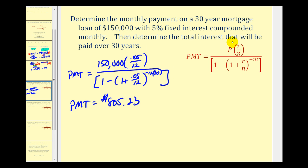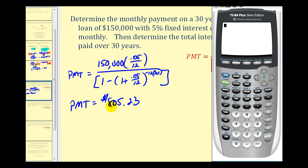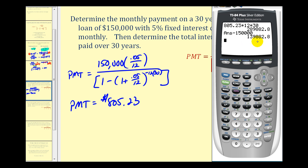The second part asks us to determine the total interest paid over 30 years. We're going to make 360 payments of $805.23 for a loan of $150,000. The total paid is $805.23 times 12 months times 30 years, which equals $289,882.80. Subtracting the $150,000 loan amount, the total interest paid over 30 years is $139,882.80 — almost as much as the loan itself.